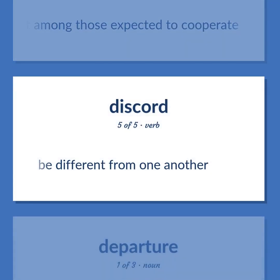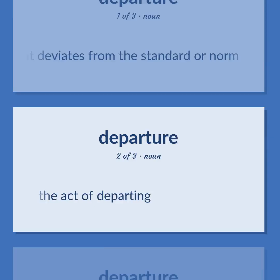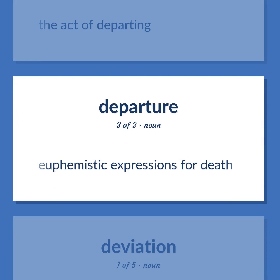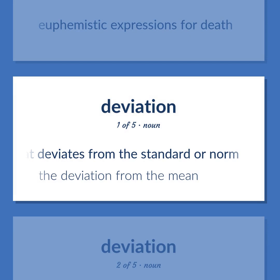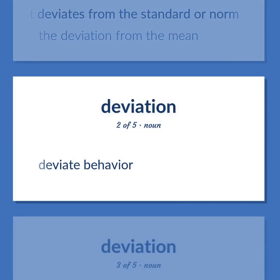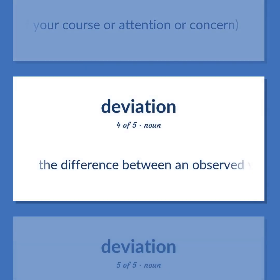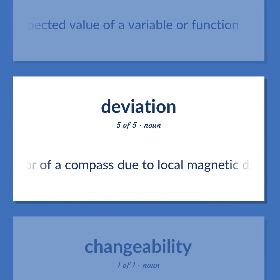Be different from one another. A variation that deviates from the standard or norm. The act of departing. Euphemistic expressions for death. A variation that deviates from the standard or norm; the deviation from the mean. Deviate behavior. A turning aside of your course, attention, or concern. The difference between an observed value and the expected value of a variable or function. The error of a compass due to local magnetic disturbances.